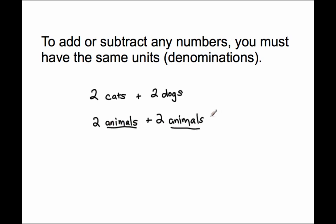So I know that my answer will be in the unit 'animals.' Now I can add the numbers: 2 plus 2 is 4. 4 what? 4 animals. I can't do that with cats and dogs directly because the units are different. To add or subtract any numbers, you must have the same units — in other words, denominations.